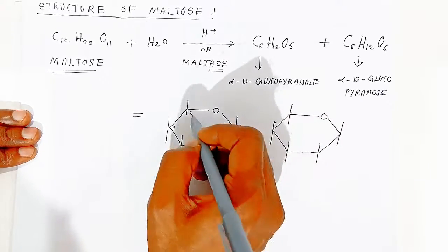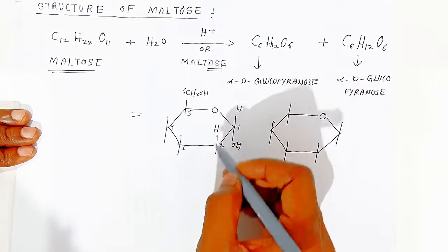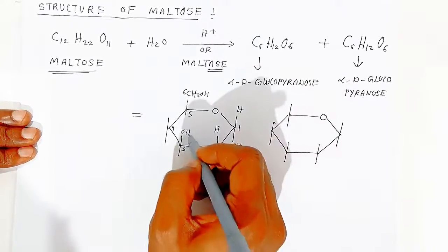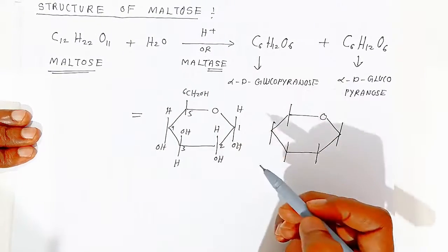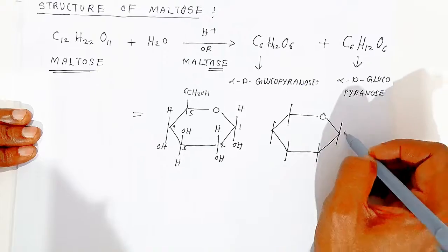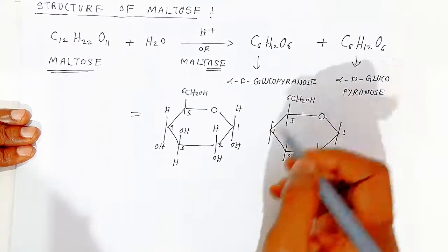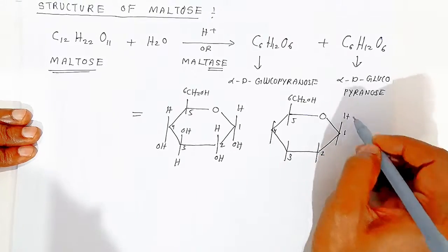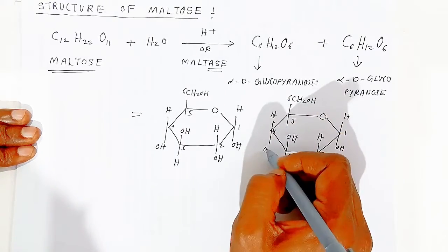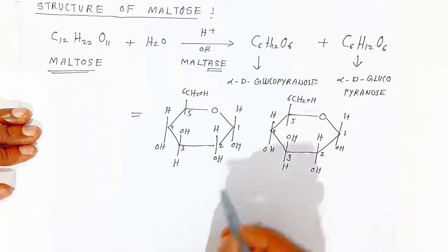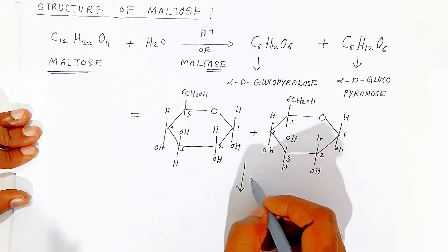Label carbons 1 through 5, with carbon 6 as CH₂OH in each ring. In alpha-D-glucopyranose, hydrogen is above and hydroxyl is below at carbon 1; at carbon 3, OH is above and hydrogen is below. Fill all remaining valencies with hydrogen and hydroxyl.